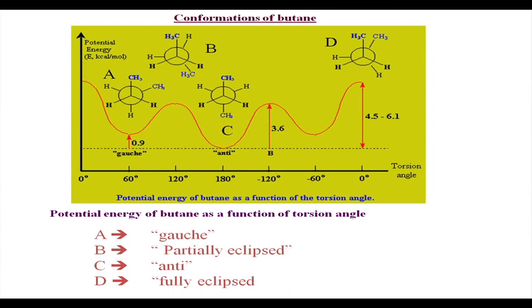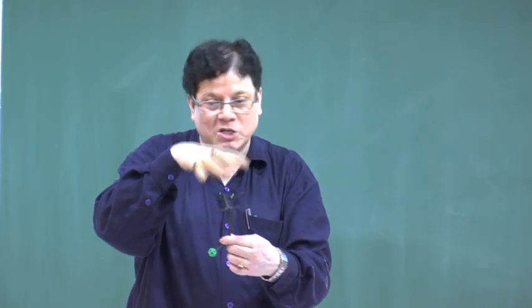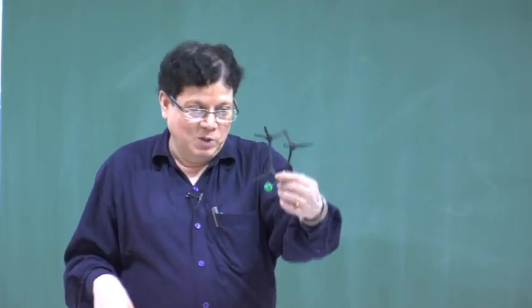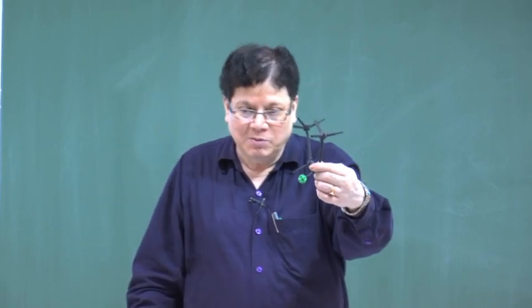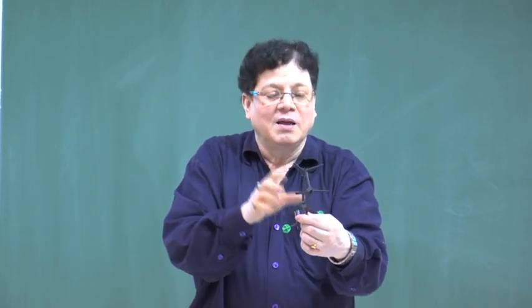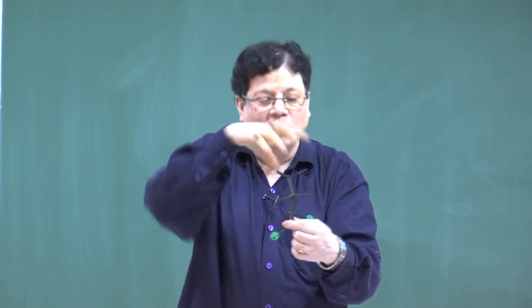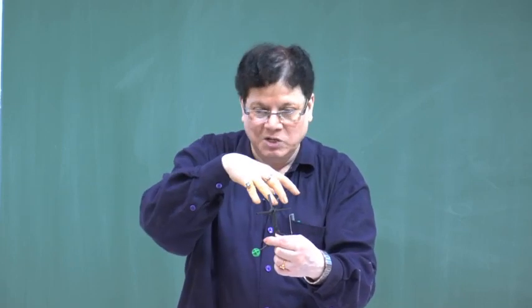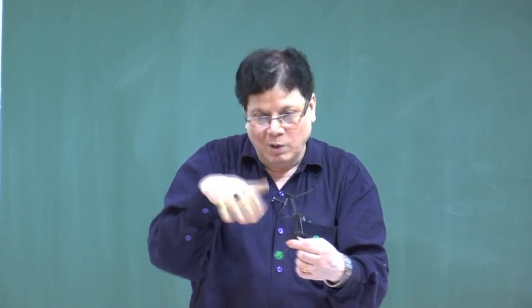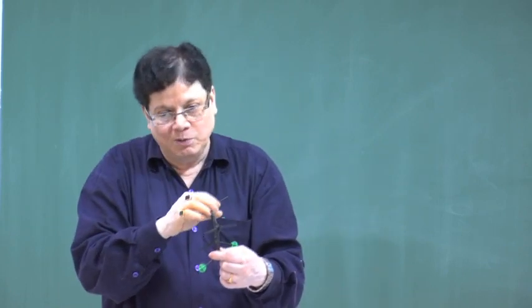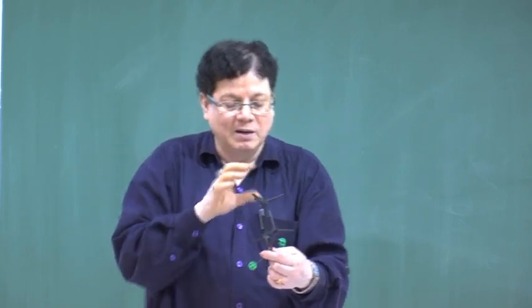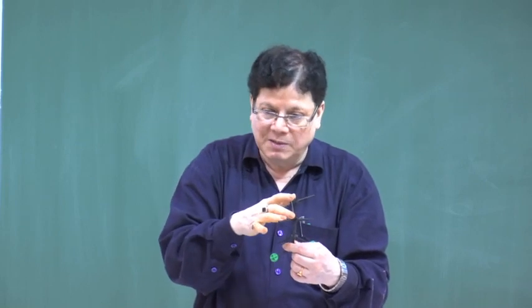There will be van der Waals repulsive force acting between the methyls, because this is not hydrogen unlike in ethane. So this contributes enormously to the energy of the system. Apart from bond opposition strain, this methyl-methyl steric interaction — the van der Waals repulsive force — contributes a major portion of energy to this eclipsed system. So fully eclipsed has the highest energy.